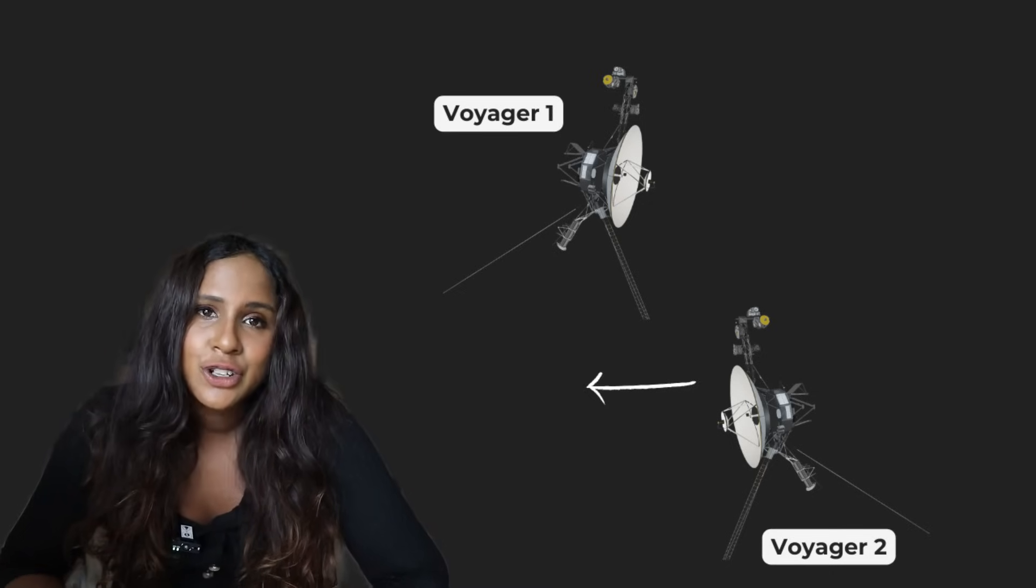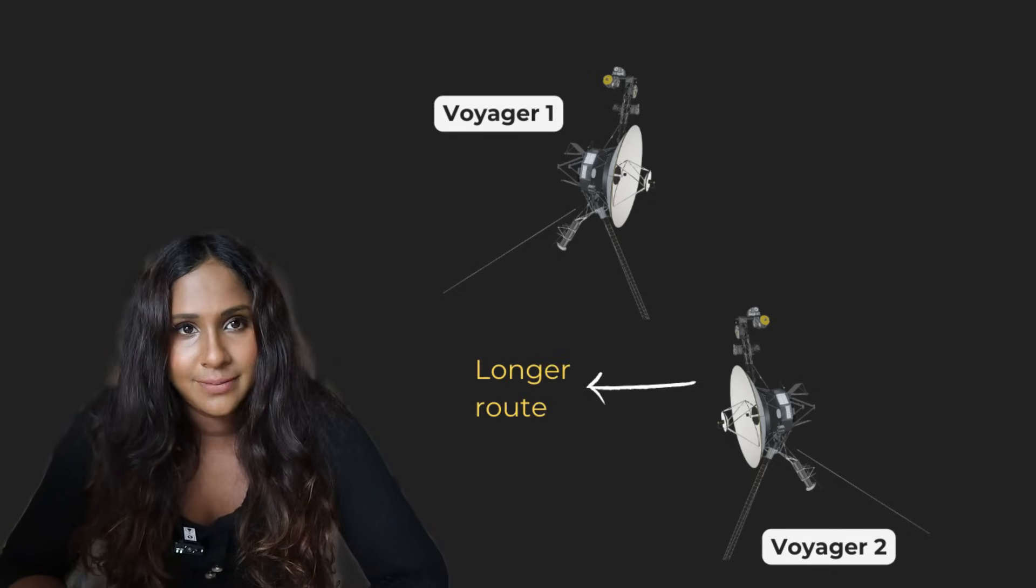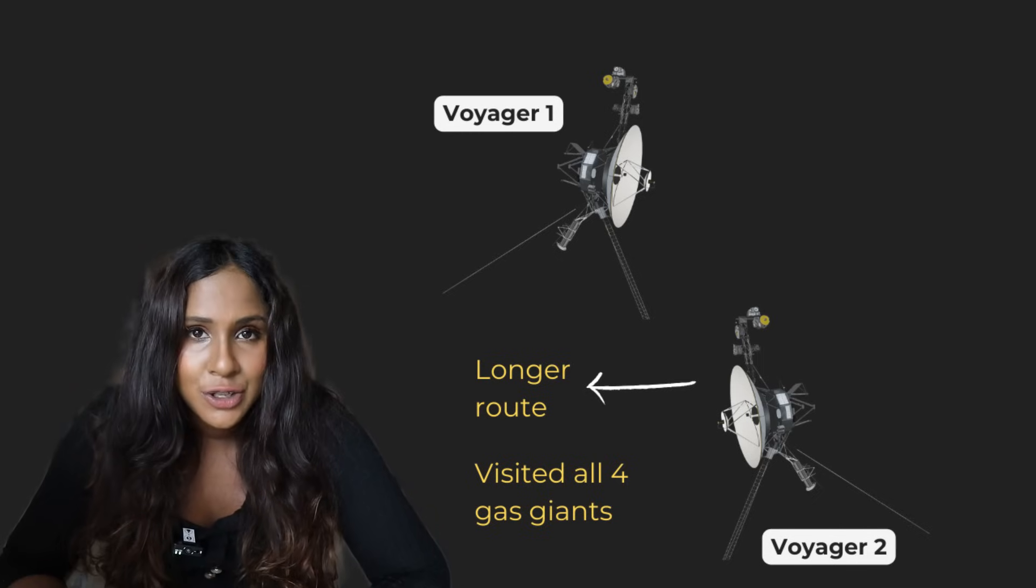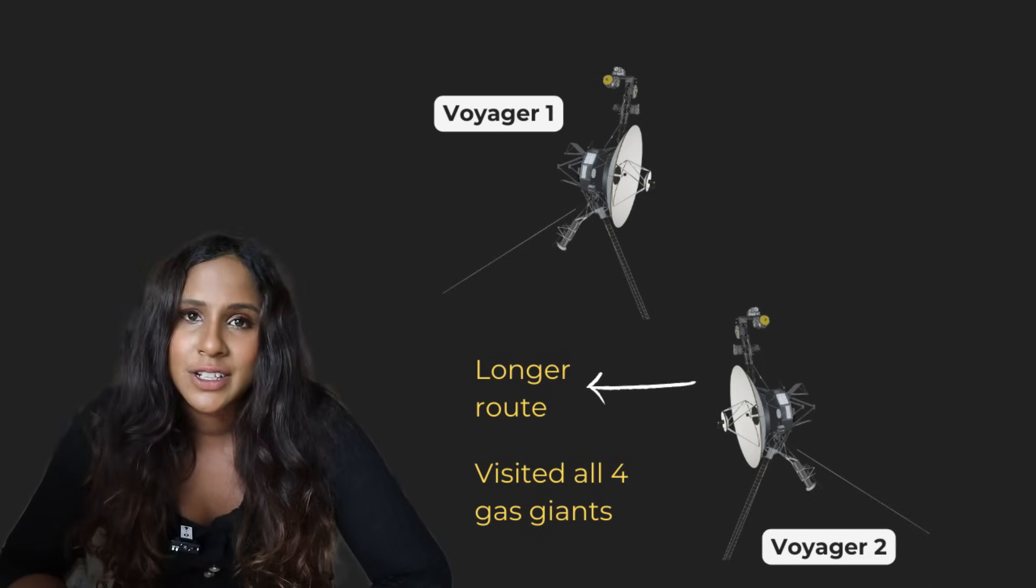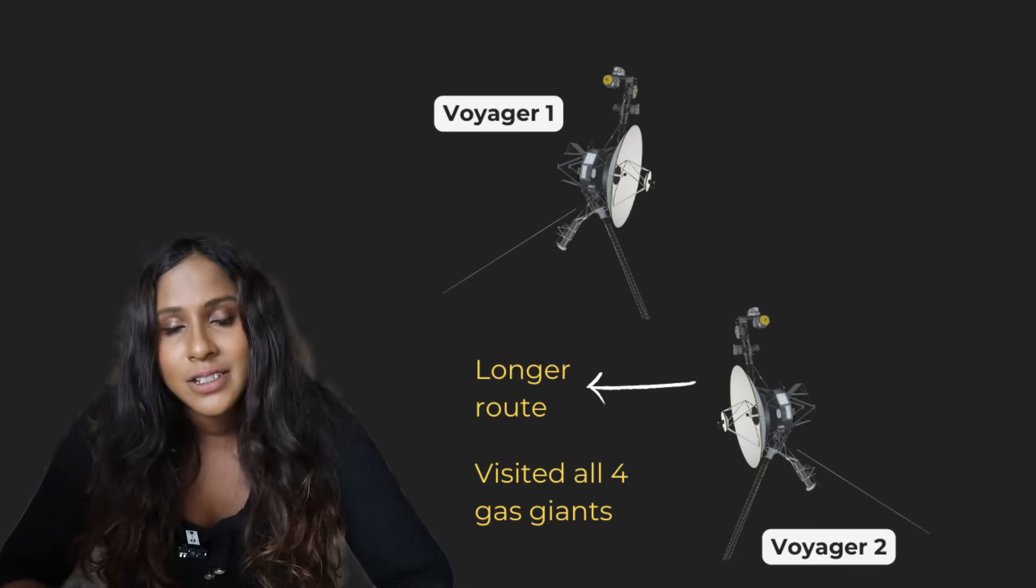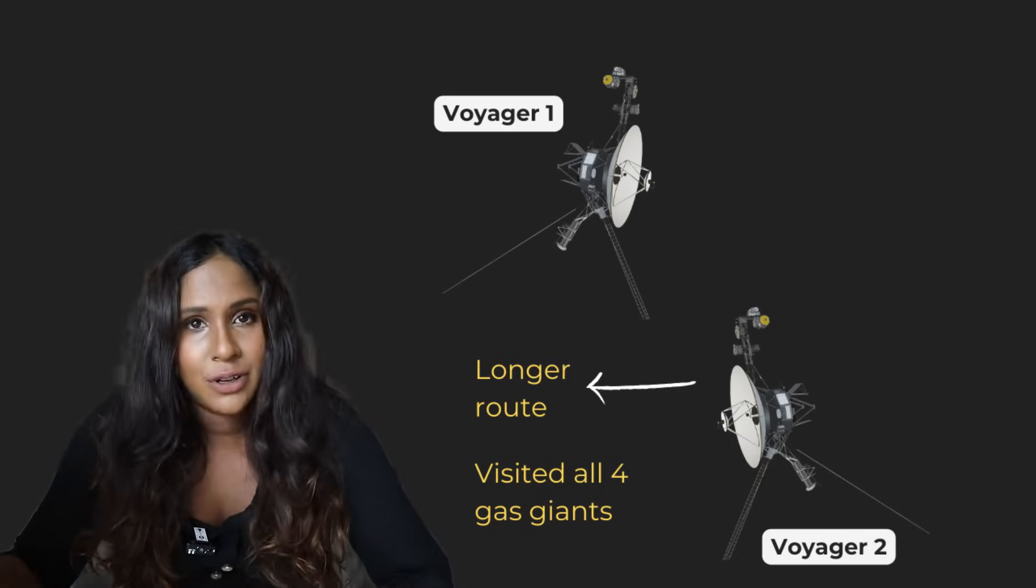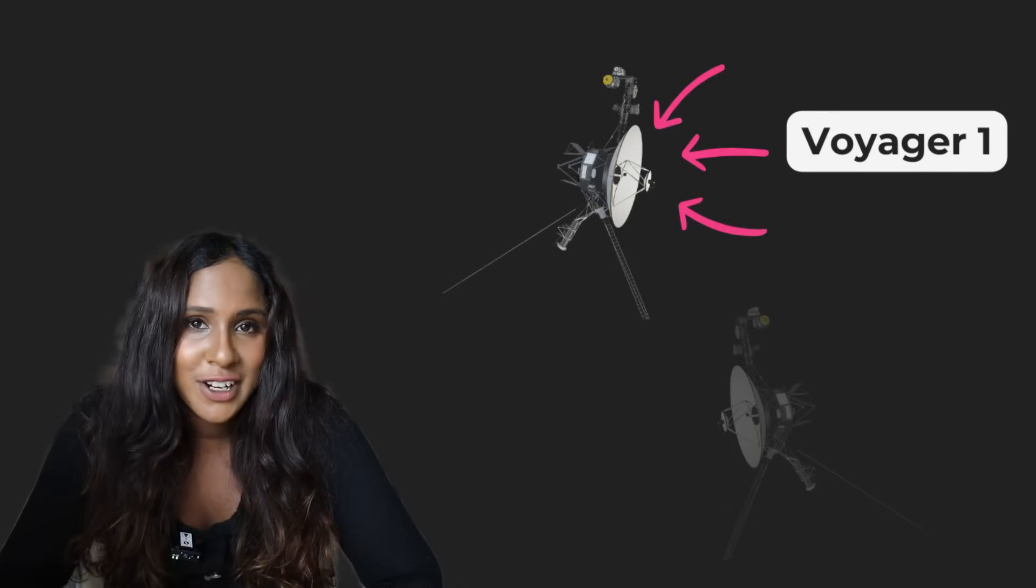Voyager 2, on the other hand, just took a longer, slower route, but did give us a unique chance to visit all four of our gas giant planets, including Jupiter, Saturn, Uranus, and Neptune. It is still out there, but just in a different part of space. However, we're concentrating on Voyager 1.